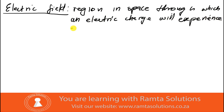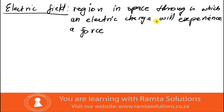In grade nine you said a field is a region in space through which an object will experience a force. But now in grade 11, talking about electric field, we are being specific — in place of 'object' we say 'electric charge.' So electric field is a region in space through which an electric charge will experience a force.